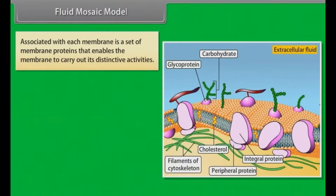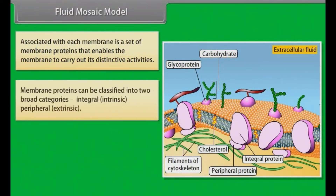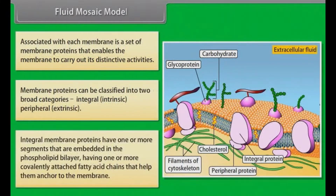Associated with each membrane is a set of membrane proteins that enables the membrane to carry out its distinctive activities. Membrane proteins can be classified in two broad categories: integral, that is intrinsic, and peripheral, that is extrinsic. Integral membrane proteins have one or more segments that are embedded in the phospholipid bilayer, having one or more covalently attached fatty acid chains that help them anchor to the membrane.